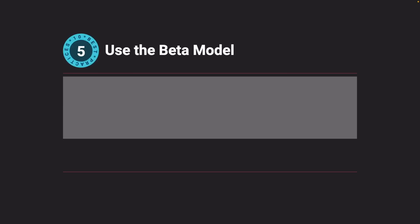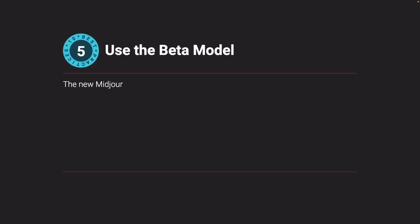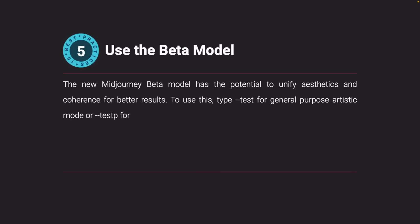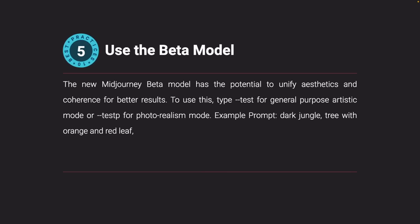Use the beta model. The new Midjourney beta model has the potential to unify aesthetics and coherence for better results. To use it, type 'test' for general-purpose artistic mode or 'test p' for photorealism mode. Example prompt: 'dark jungle tree with orange and red leaves at sunset drawing with colored pencils test.'